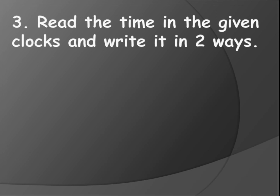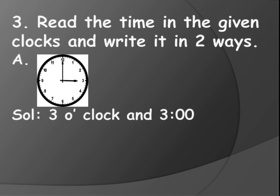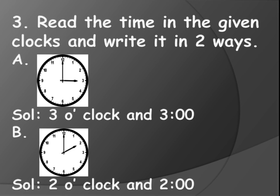Now let's see: read the time in the given clocks and write it in two ways. That means they have given the clock and you need to write what time it is. So look at this — there is a clock where the short hand is pointing to 3 and the long hand is pointing to 12, that means it is 3 o'clock. Two ways: 3 o'clock or 3 colon 2 zeros. Next, the short hand is pointing to 2 and the longer hand is pointing to 12 — that means it is 2 o'clock. So you will write 2 o'clock and 2 colon 2 zeros.